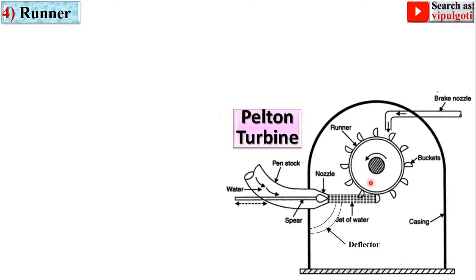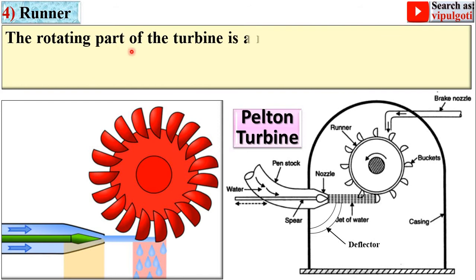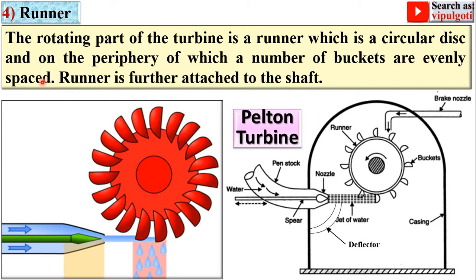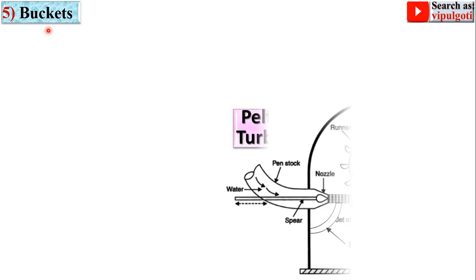Next part: the runner, sometimes called the rotor. The rotating part of the turbine is the runner, which is a circular disk on the periphery of which a number of buckets are evenly spaced. The runner is further attached to the shaft.